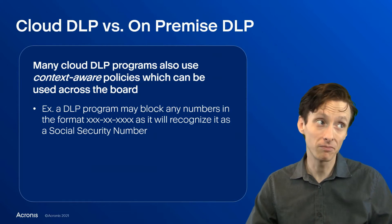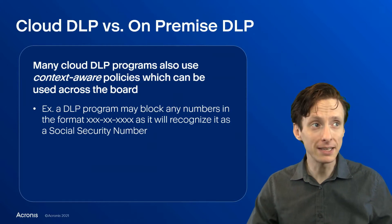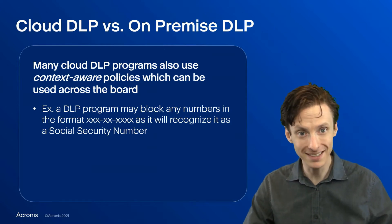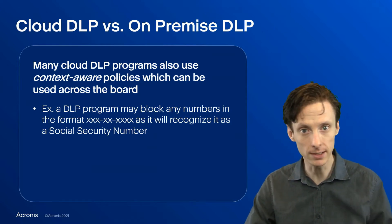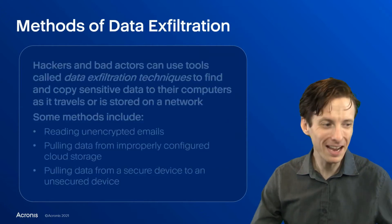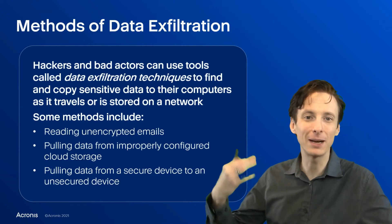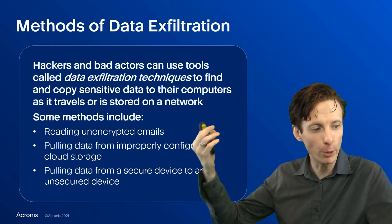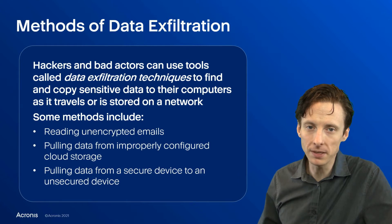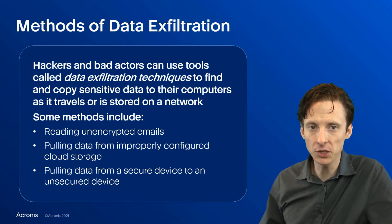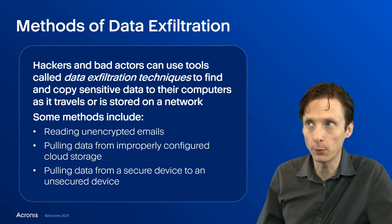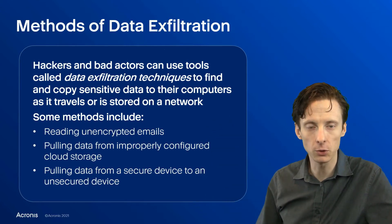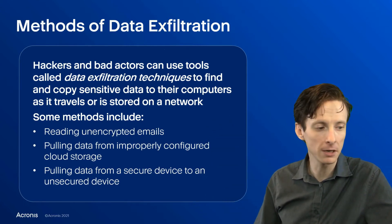The information that DLP is trying to protect is really valuable for attackers, and they've got a number of ways they might try to exfiltrate data. If we are sending unencrypted emails, they might just be able to pull that off the line as it's traversing a network.